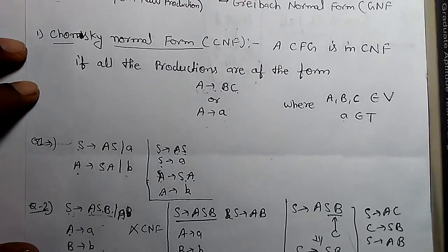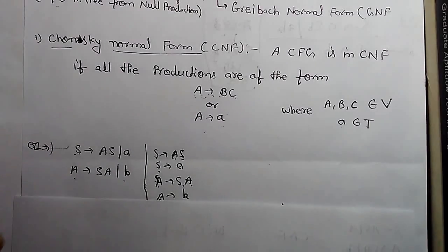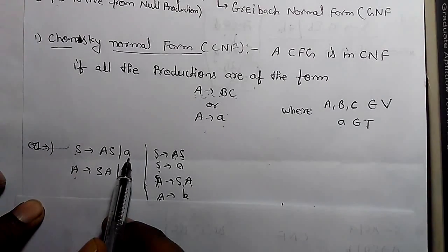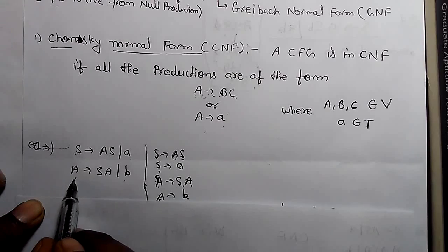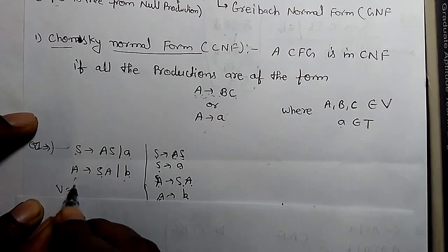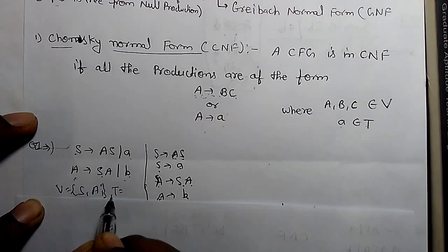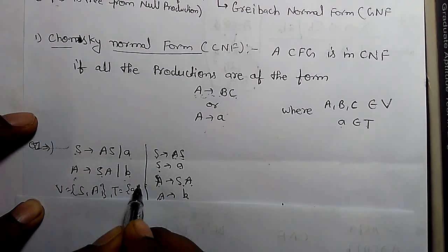Let's take some example. This is S derives AS and small a, A derives SA and small b. So variables are capital S and capital A, and terminals are small a and small b.